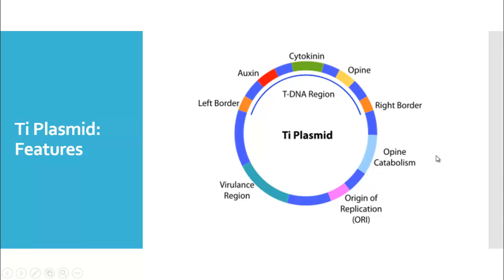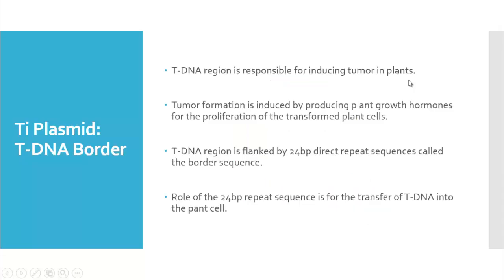The Ti plasmid also has an opine catabolism region where the opines produced from the T-DNA region can be metabolized using the enzymes produced from the opine catabolism region. It also has a virulence region that is responsible for transferring the T-DNA into the plant genome.